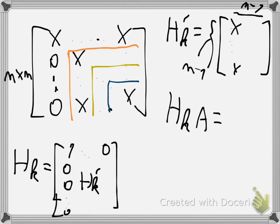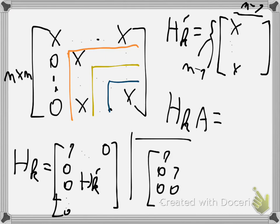For the first sub-matrix you add one 1 in the diagonal; for the second sub-matrix you add two 1s and 0s, then place the Householder transformation of the sub-matrix in the block. You continue that way until you finish.